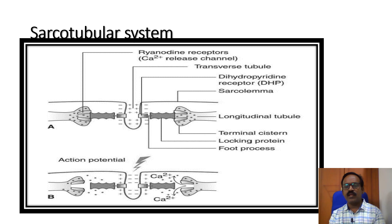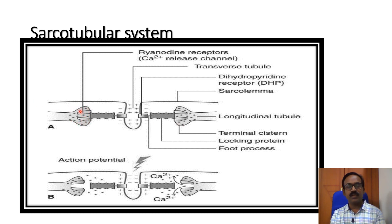This diagram depicts the sarcotubular system. This is the T-tubule. This is the L-tubule. The L-tubule has a dilated section — it is called the terminal cistern.